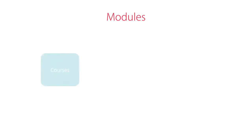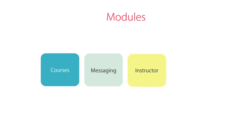So, in our Udemy example, we can potentially have modules like a course module, which includes all the components for displaying courses. We can potentially have another module, like a messaging module, which includes a bunch of components for the area of the website where you can send private messages to your instructors. We can have an instructor module, which includes the components for the instructors' dashboard, and potentially an admin module, which is the area of the Udemy website managed by the Udemy staff.